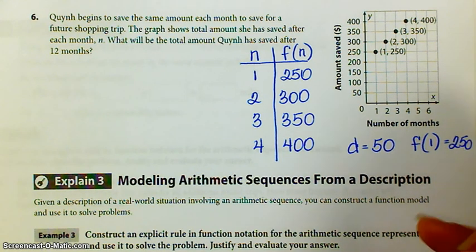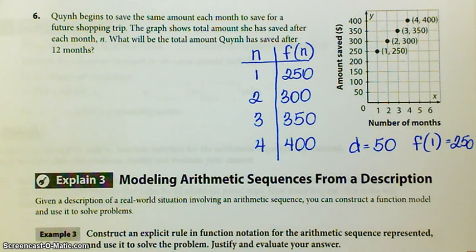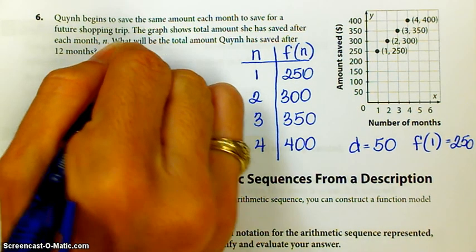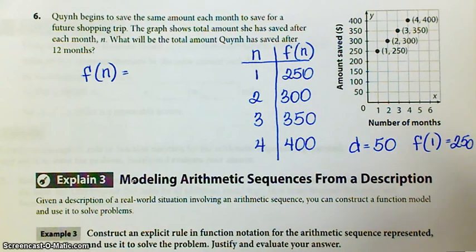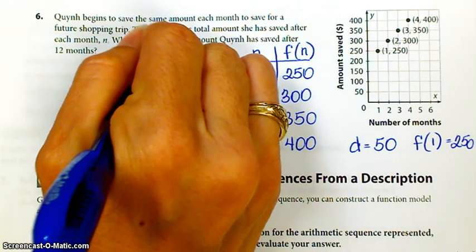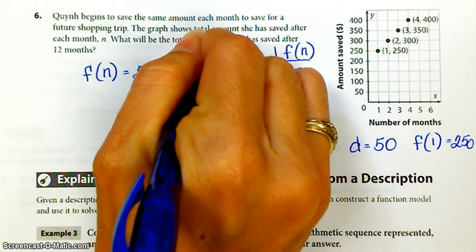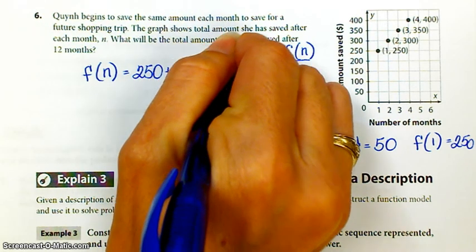I'm running out of room. And then I'm going to put it into the general explicit rule. F of N equals whatever the F of 1 is, which is 250 plus 50 N minus 1.